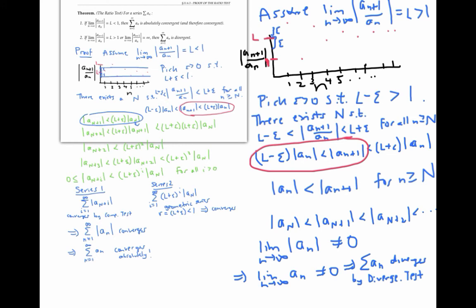We still have one detail to consider: the possibility that the limit of the absolute value of the ratios is infinity. In this case, the argument we just used works almost exactly the same. If we assume that the limit is infinity, we can skip the epsilon construction and just note that there exists some capital N such that the ratios are always bigger than, say, two, for all little n greater than or equal to capital N — since if the ratios are heading towards infinity, they're certainly going to be bigger than two eventually. This gives us the same inequality that we need.